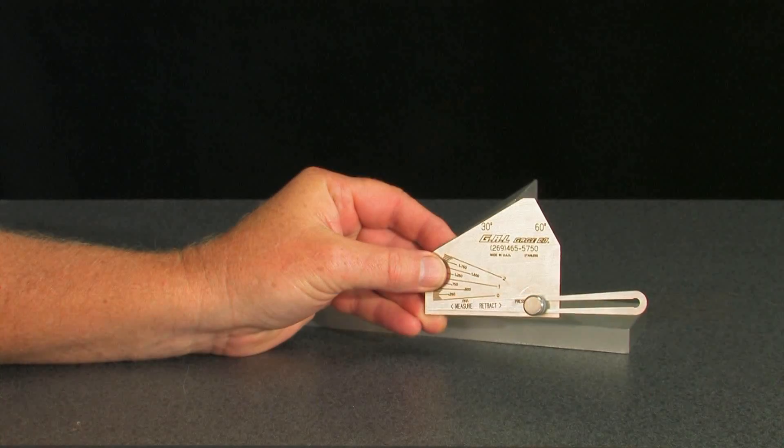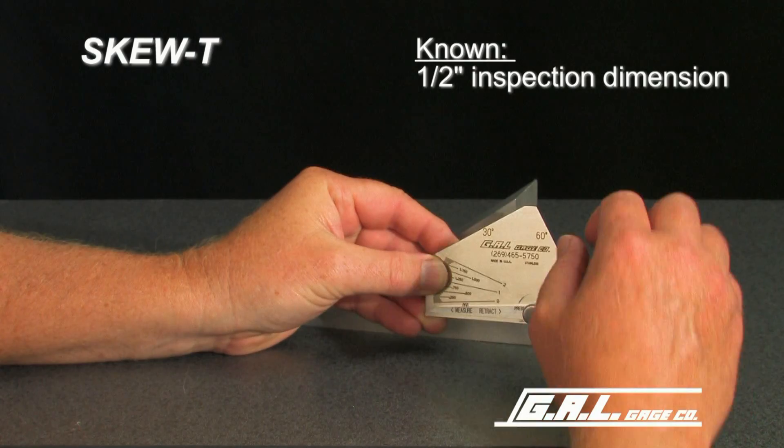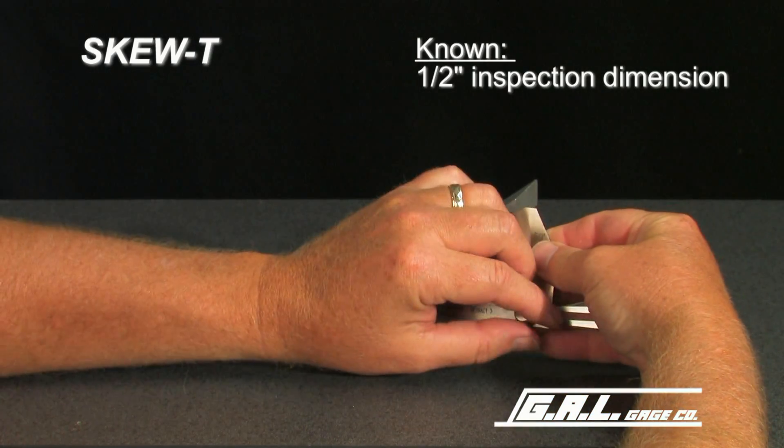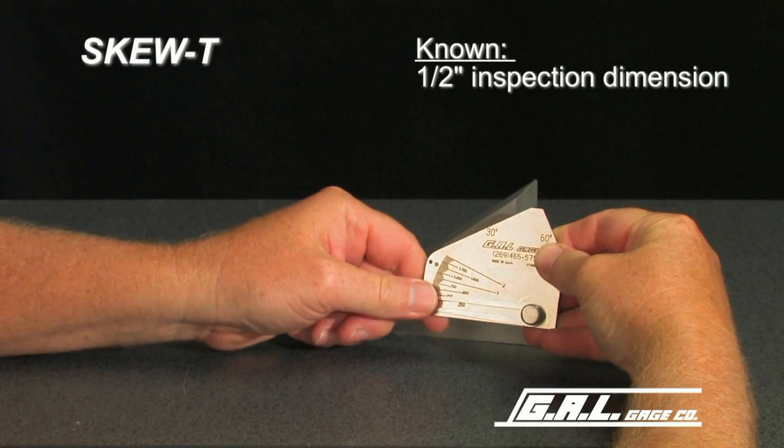In this example, a 1.5 inch inspection dimension is specified. To use the gauge, loosen the locking screw, fully extend the pointer, and lightly tighten the locking screw.